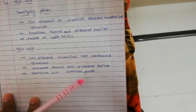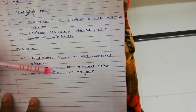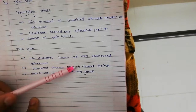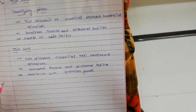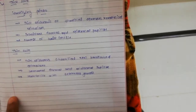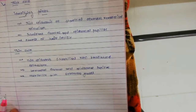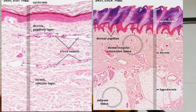Thin skin also has hair follicles with sebaceous glands. So these are the identifying points. Other structures are shown in the diagrams. Here you can see the board diagram — you can see the thick skin diagram.